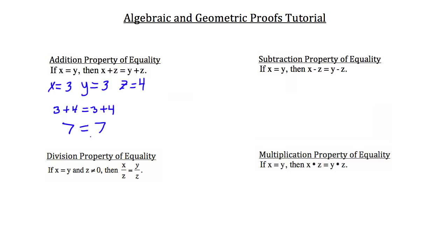Let's take a look at the subtraction property of equality. If x equals y, then x minus z equals y minus z. Using the same values for x, y, and z, 3 minus 4 on the x minus z side equals 3 minus 4 on the y minus z side. So negative 1 equals negative 1, which is the subtraction property of equality.